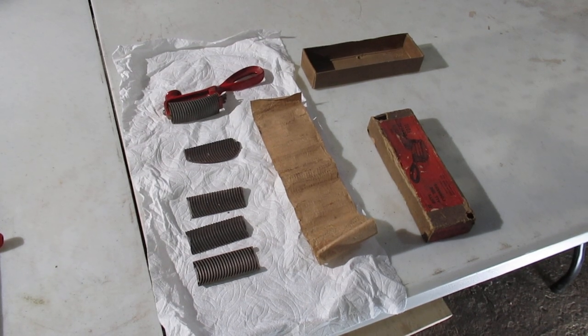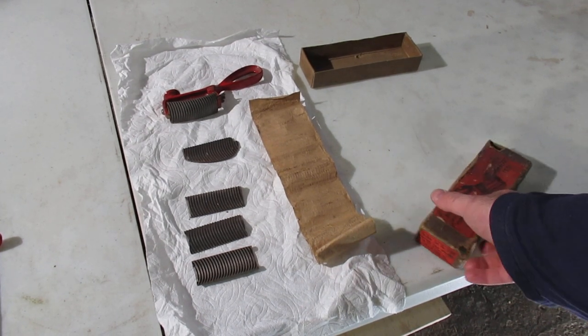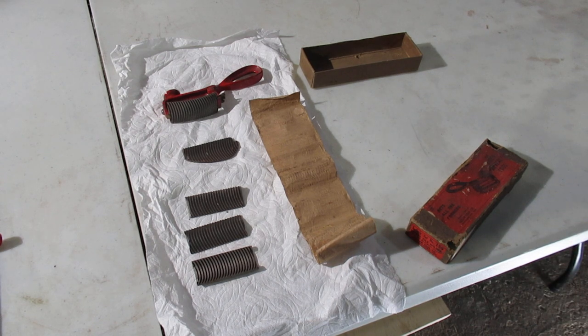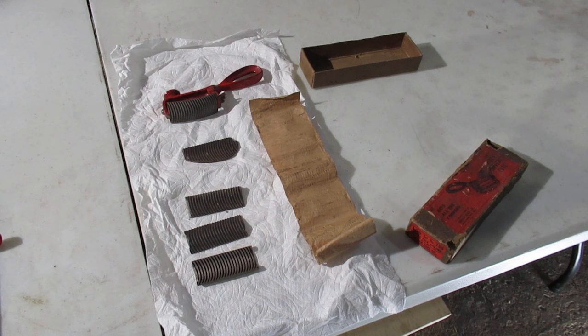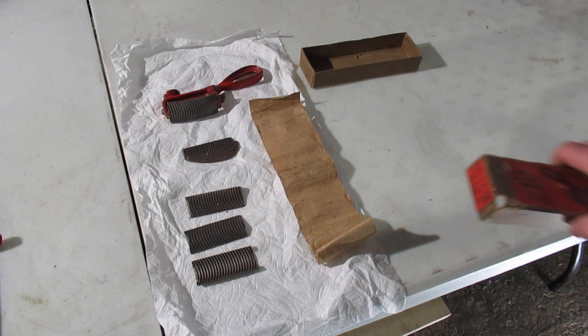This video we are going to look at a Heller reveal tool which is an older body file that was used for lead loading. I think it was designed for the 30s and 40s vehicles for the most part and if you buy the entire kit it comes with five files all together, so we'll take a quick look at it.